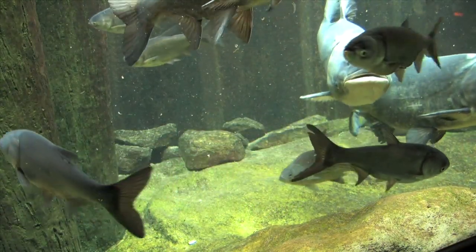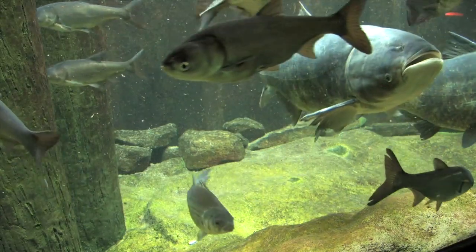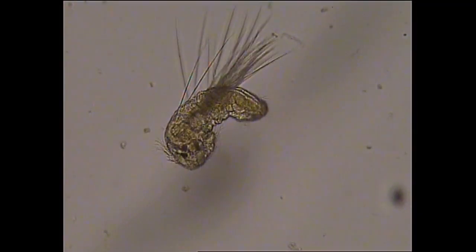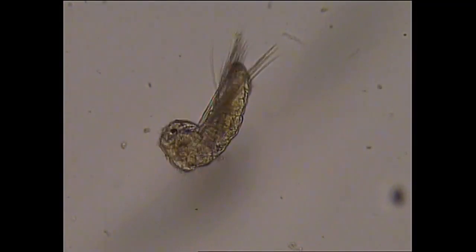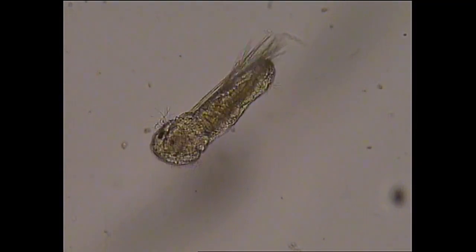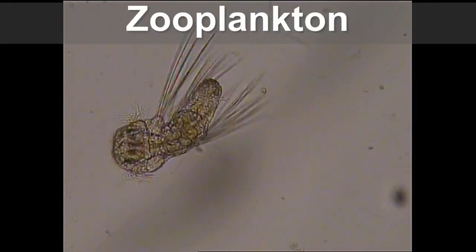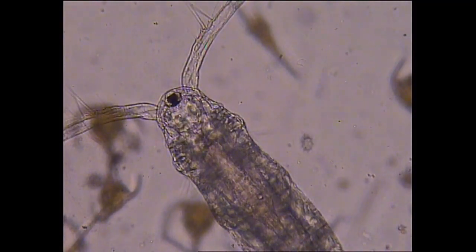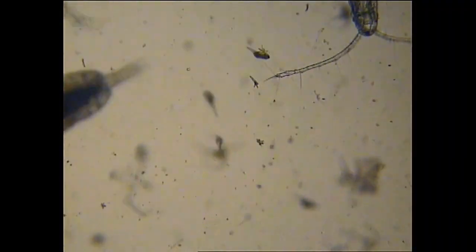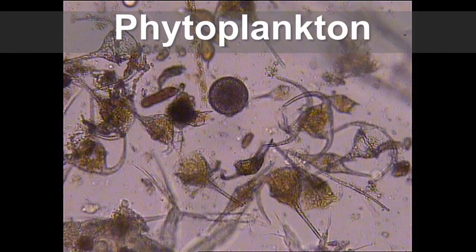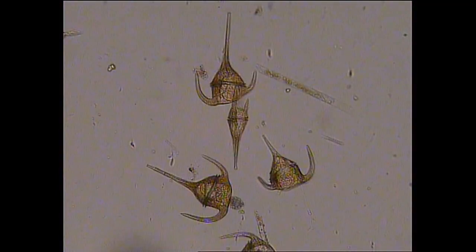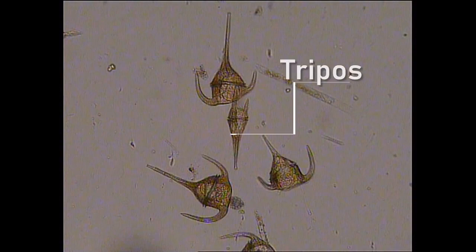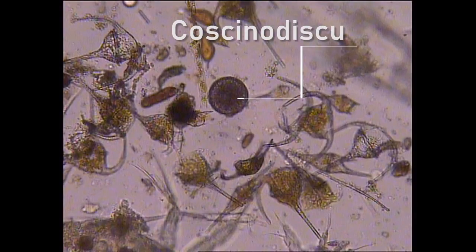Bighead and silver carp are effective filter feeders, feeding rapidly on zooplankton and phytoplankton. Because they are so effective, carp can outcompete other organisms for these prey items. As phytoplankton form the base of many freshwater food chains, their removal from a system will influence the food sources of zooplankton, smaller fish, and ultimately larger game fish. In this way, whole aquatic systems can be affected by invasive carp.